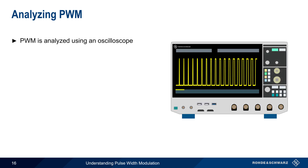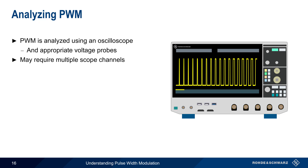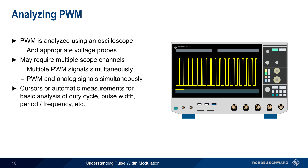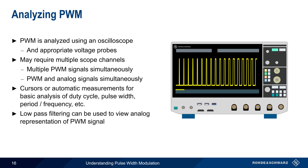Testing or analyzing pulse width modulation is usually performed using an oscilloscope and appropriate voltage probes. In some cases, analysis of pulse width modulated signals may require more than one scope channel, either to look at multiple pulse width modulated signals simultaneously, or to look at both a pulse width modulated signal and a related analog signal at the same time. The basic measurement parameters, such as duty cycle and frequency, are relatively easy to measure with an oscilloscope, either manually using cursors or by means of automatic measurement functions. Some scopes also have the ability to filter acquired signals, and a low-pass filter can be used to view an analog representation of a pulse width modulated signal.